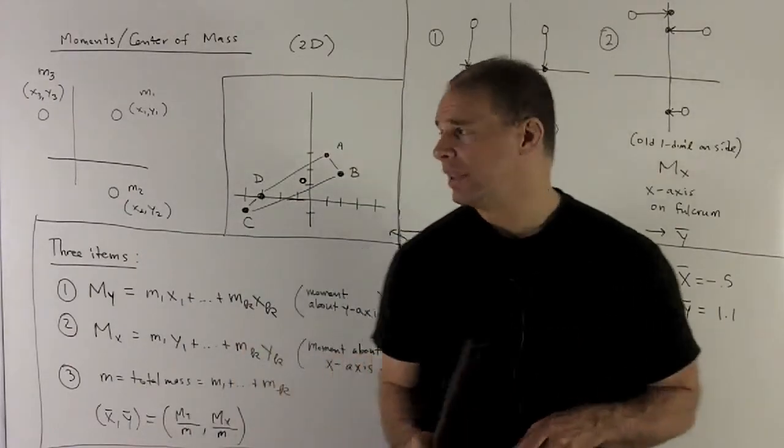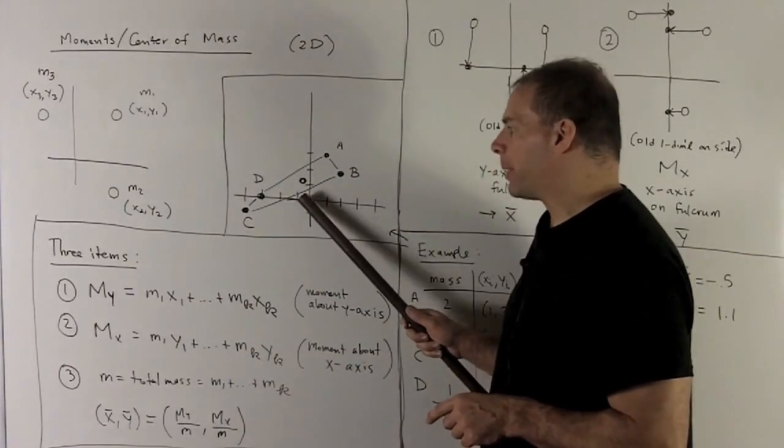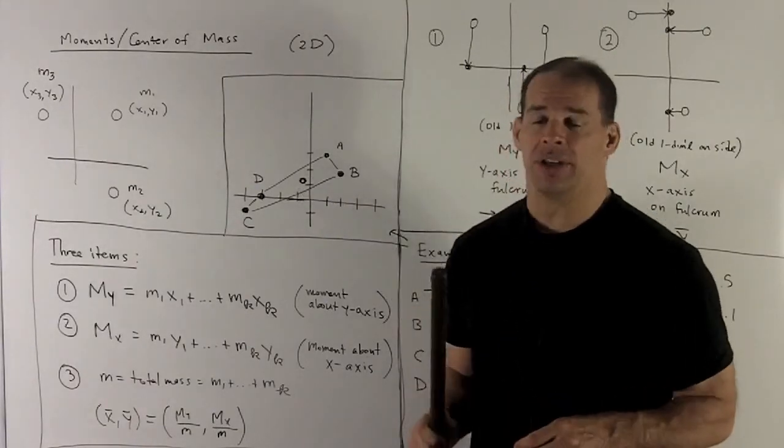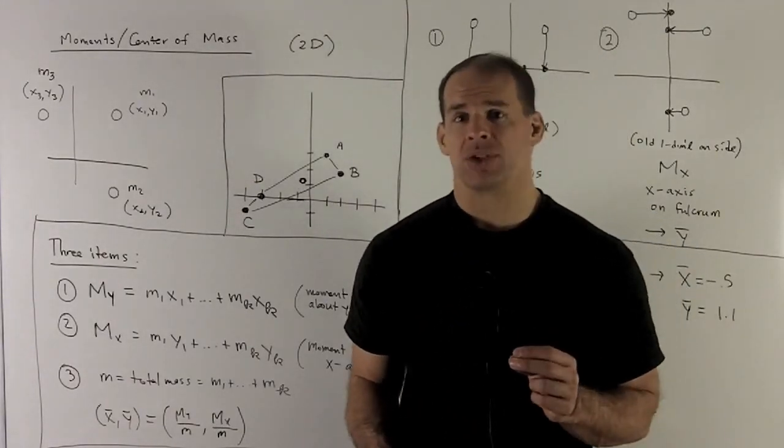We notice on our graph, that's going to wind up, we're going to go back by a half, up by 1.1, and that's winding up in the middle of our region. So, we probably did this right.